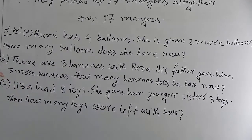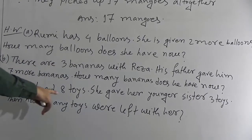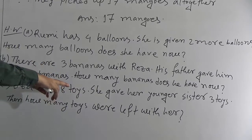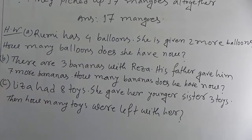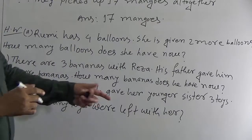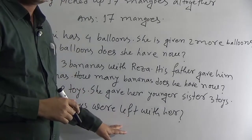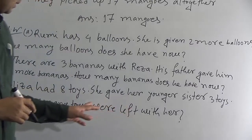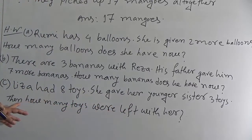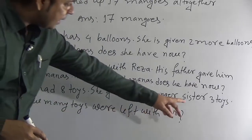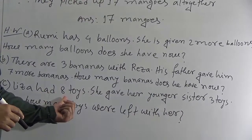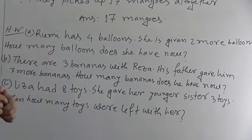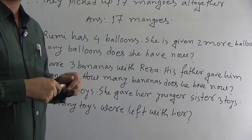Question C: Liza had 8 toys and she gave her younger sister 3 toys. How many toys were left with her? The key word here is 'left,' which means you have to subtract the toys given to the younger sister from Liza's total toys to get the required answer.